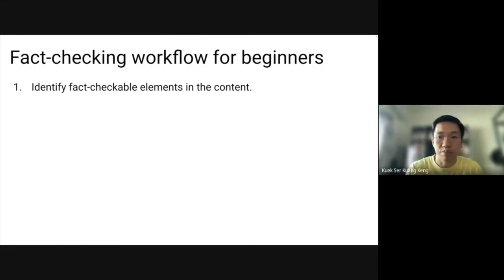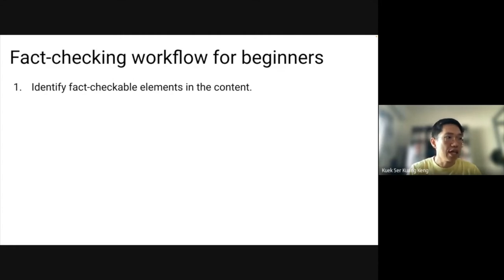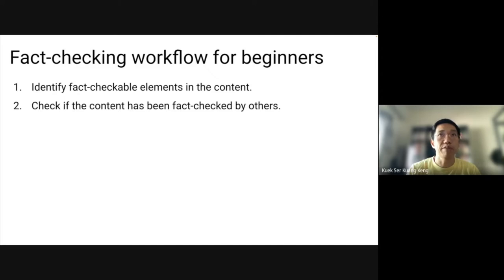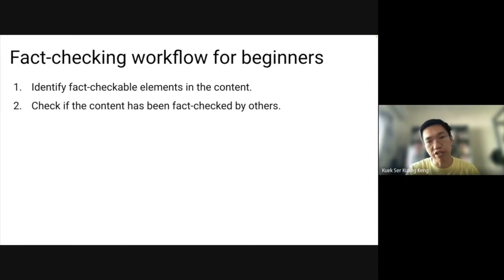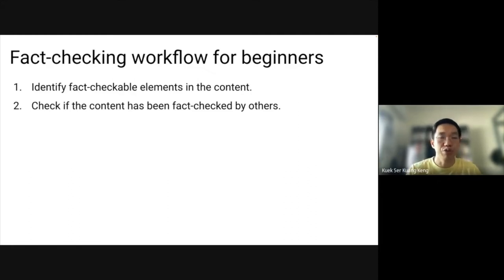Here is a fact-checking workflow for beginners. When you decide to fact-check something or receive false information, the first step is to identify fact-checkable elements: names, locations, dates, or specific information. Check if the content has already been fact-checked by others — there are many fact-checkers working at the same time, so if it has been fact-checked, you don't have to waste your time. Sometimes you can cite from other fact-checkers. I'll show you how to look for information that has already been fact-checked.